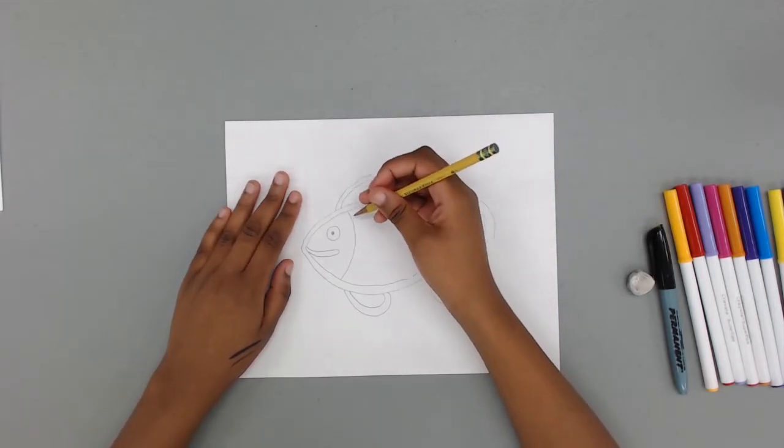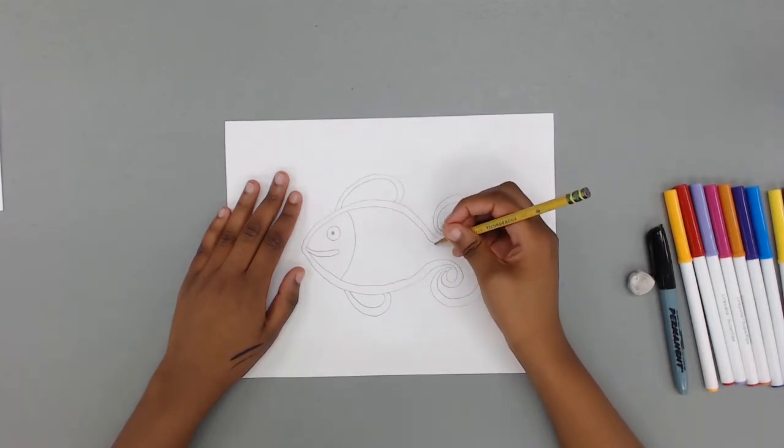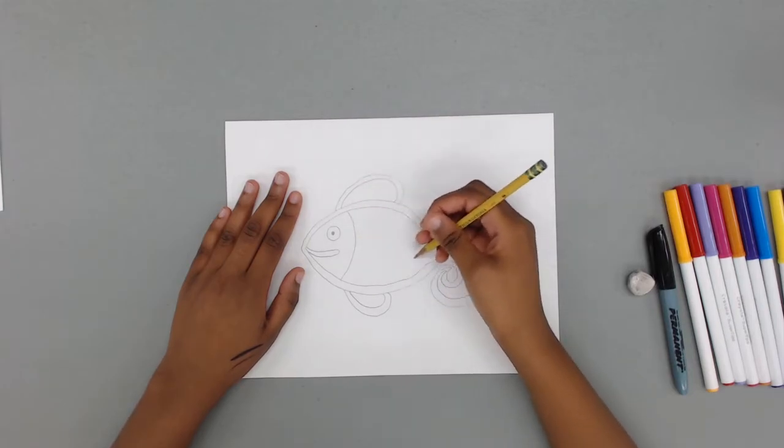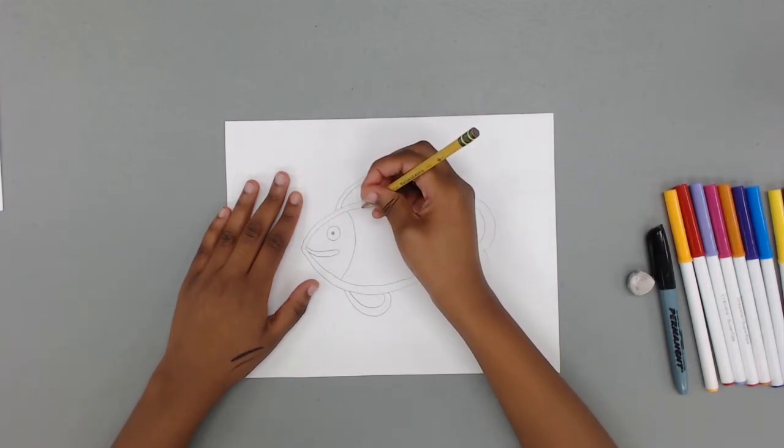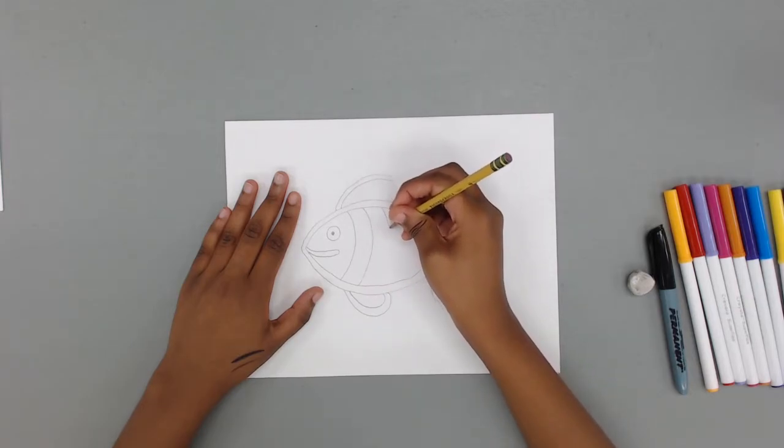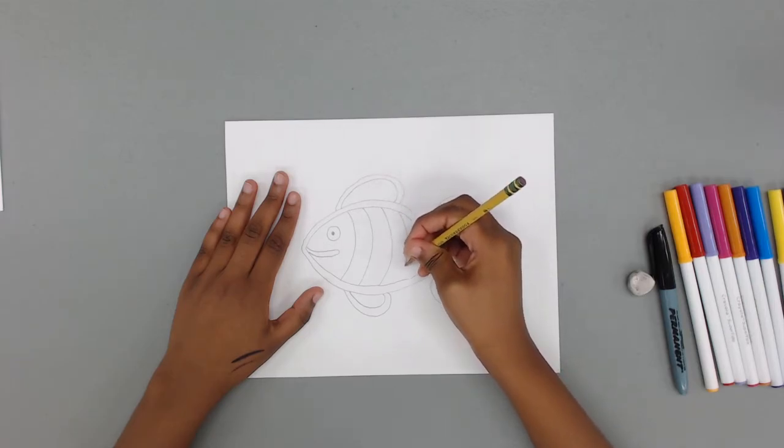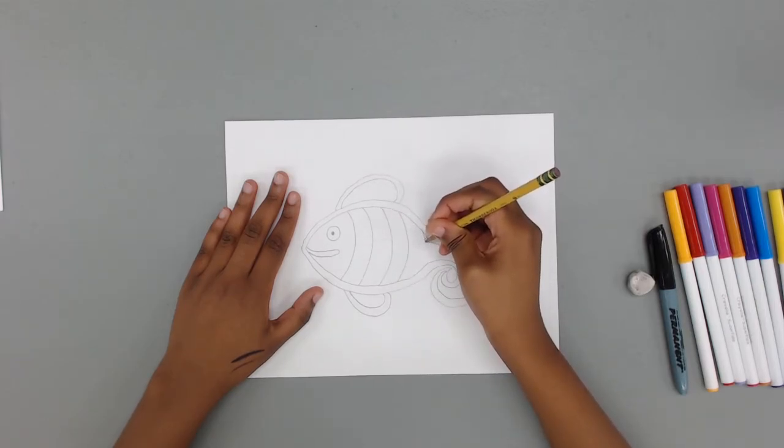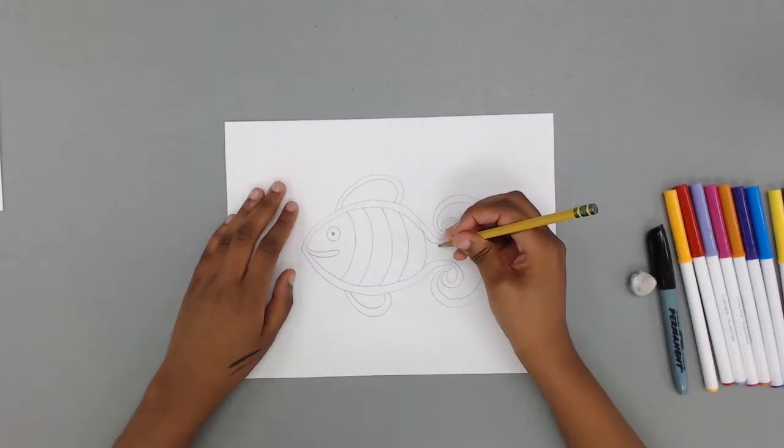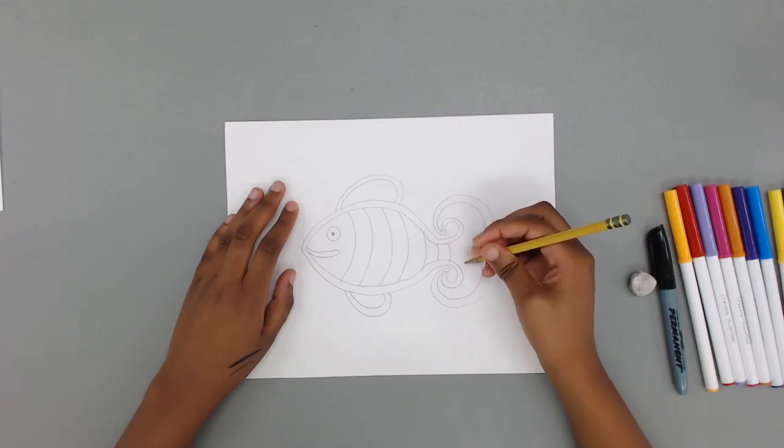Next we're going to add some curved lines to divide the fish's body up until we reach the tail. This is where we're going to put all our fancy designs. We're going to add about four lines: one, two, three, and four. We're going to add a few more lines for the tail, and stop once it begins to curve.